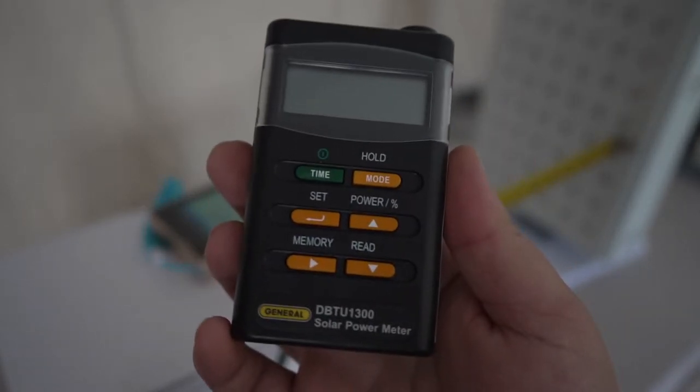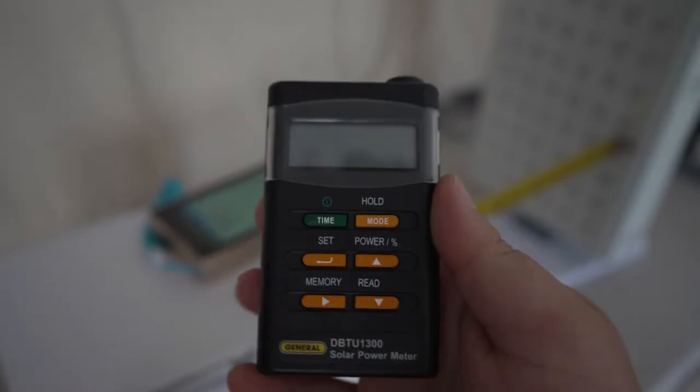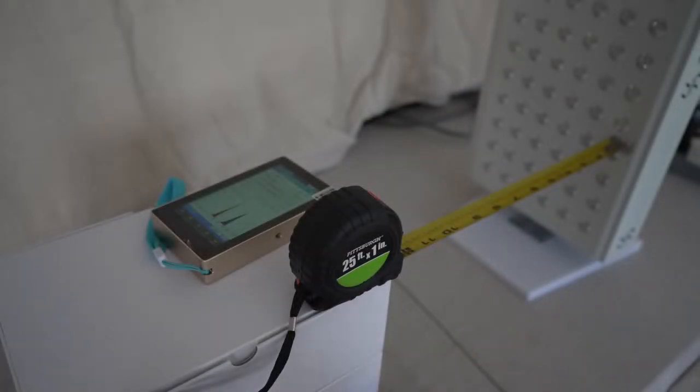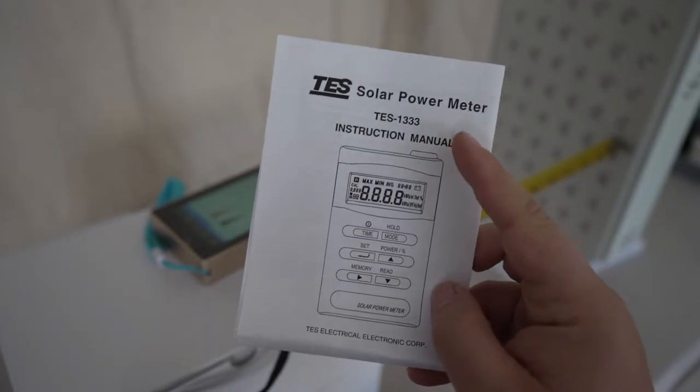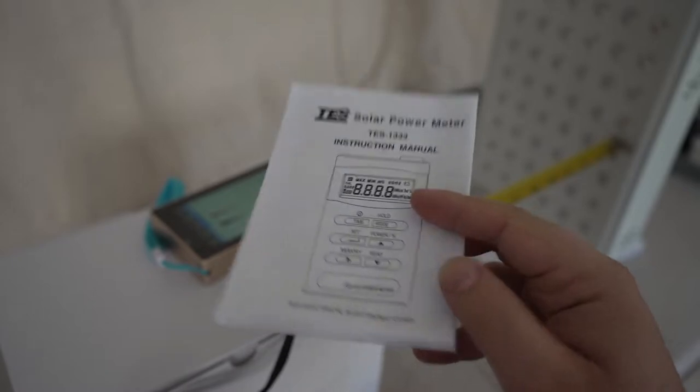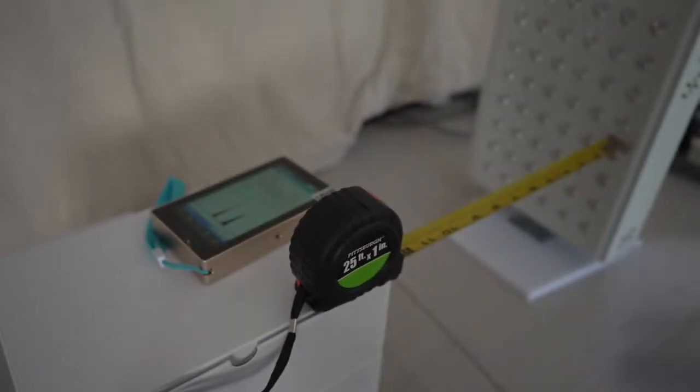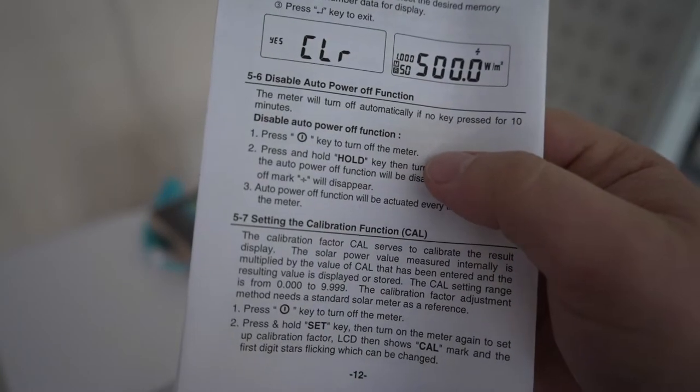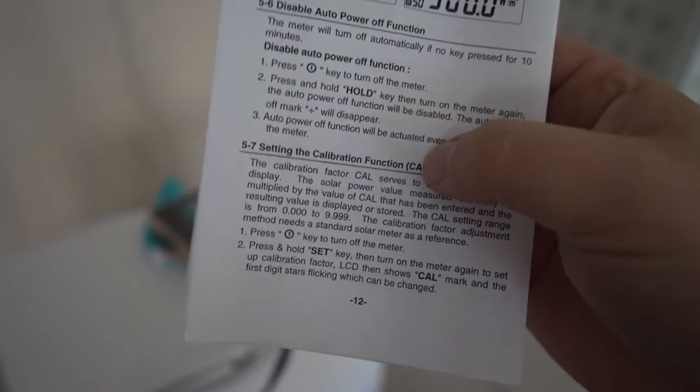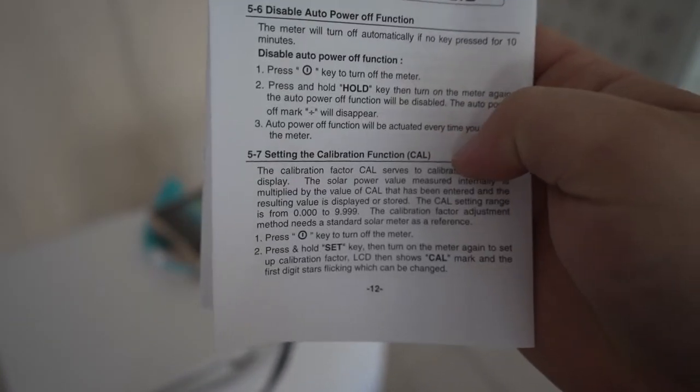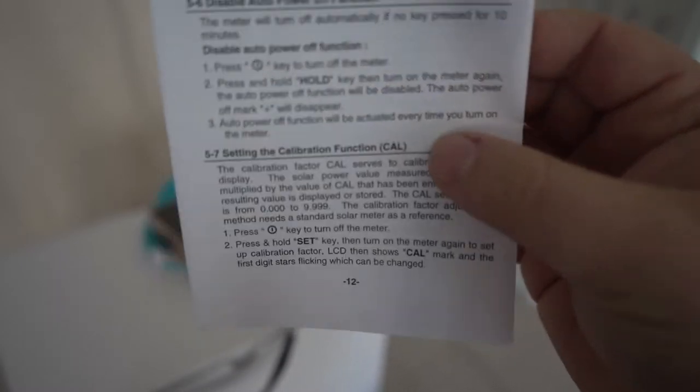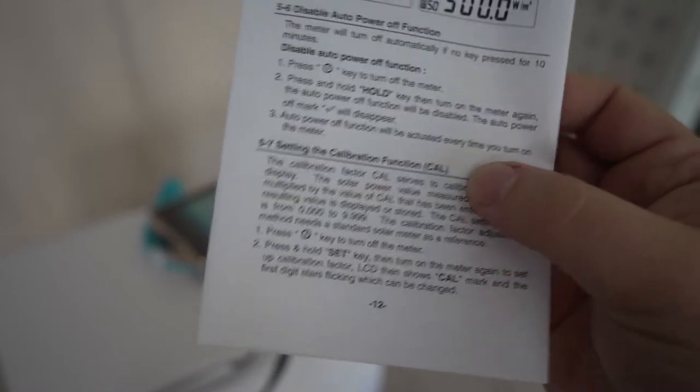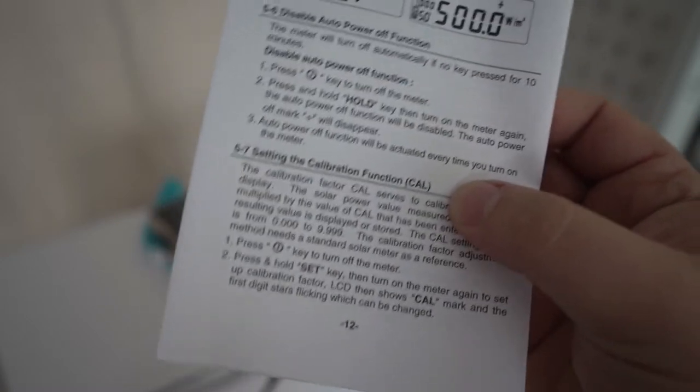But one thing I wanted to point out with this video, a really cool hack, is that I was looking through the instruction manuals for the TES-1333, and I found that there's a way to change the calibration. So there's a whole instruction on how to change the calibration function that we're going to go through right now, and that way you can take your measurements and your numbers will be correct.